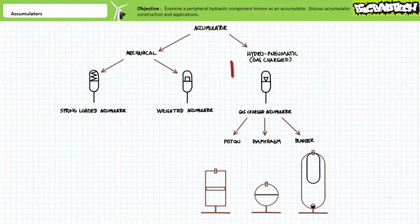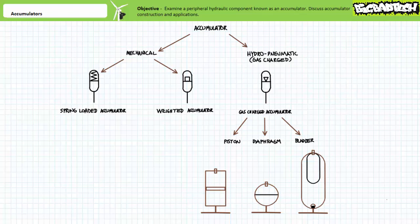The other class of accumulators, gas-charged or hydropneumatic accumulators, use compressed gas to exert force on a hydraulic liquid. Gas-charged accumulators are categorized by the barrier used to separate the compressed gas from the liquid — either a piston, a diaphragm, or a bladder. There is only one schematic symbol for a gas-charged accumulator regardless of construction: the base accumulator symbol with an empty arrowhead.